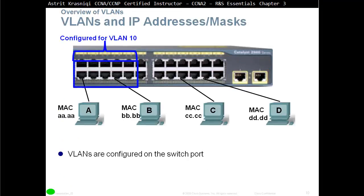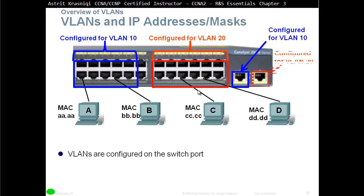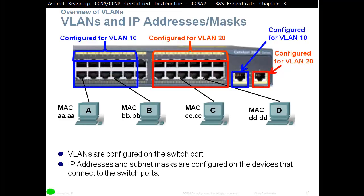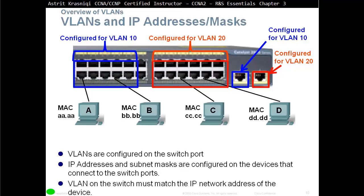VLANs are configured on the switch port. We access the switch port and configure the VLAN — for example, create VLAN 10 and assign certain ports to it, then create VLAN 20 and assign other ports to it. The IP address and subnet mask are configured on the device that connects to the switch port, and the VLAN on the switch must match the IP address network on the device.